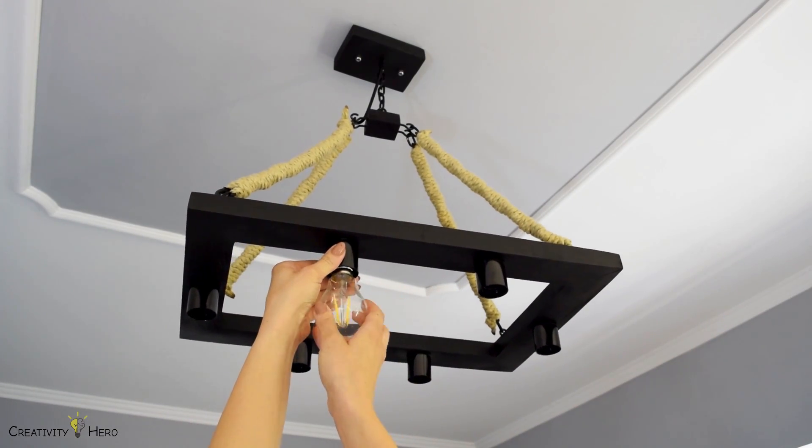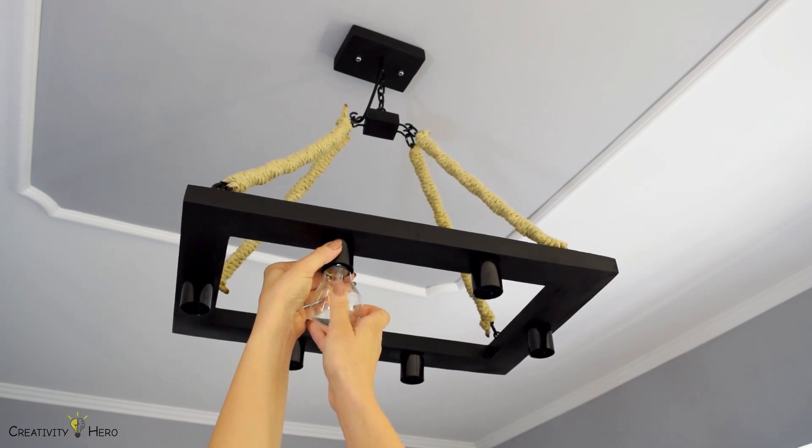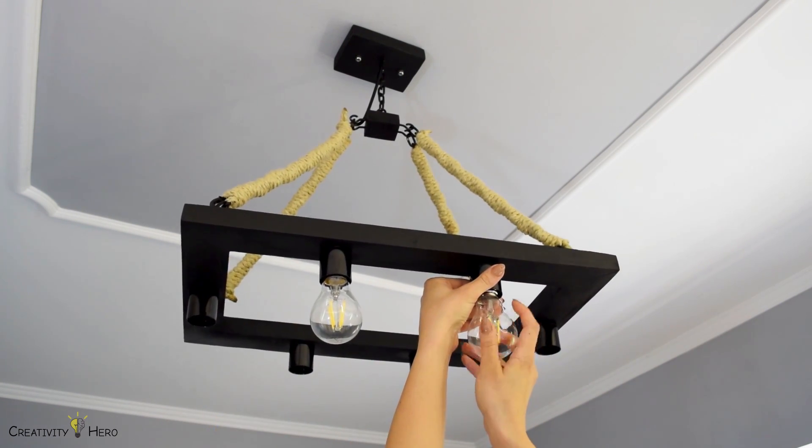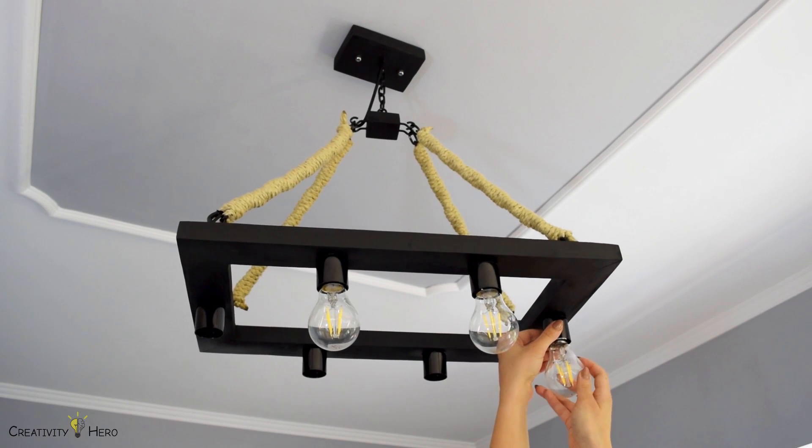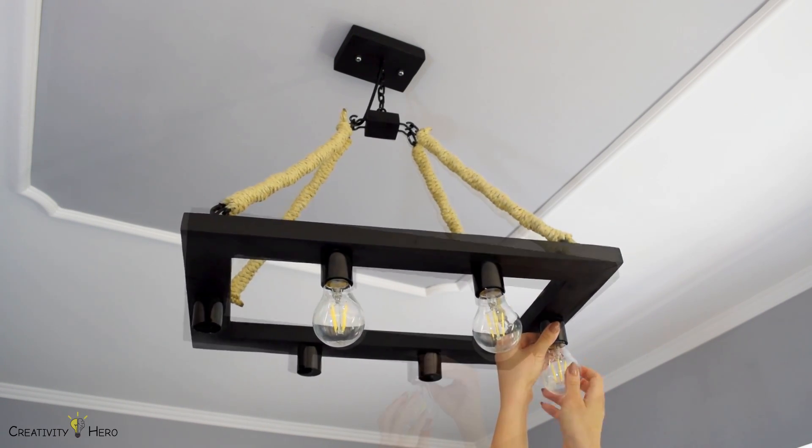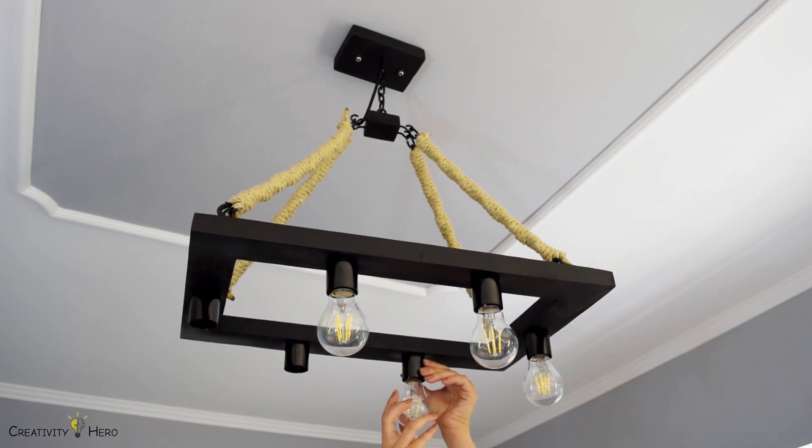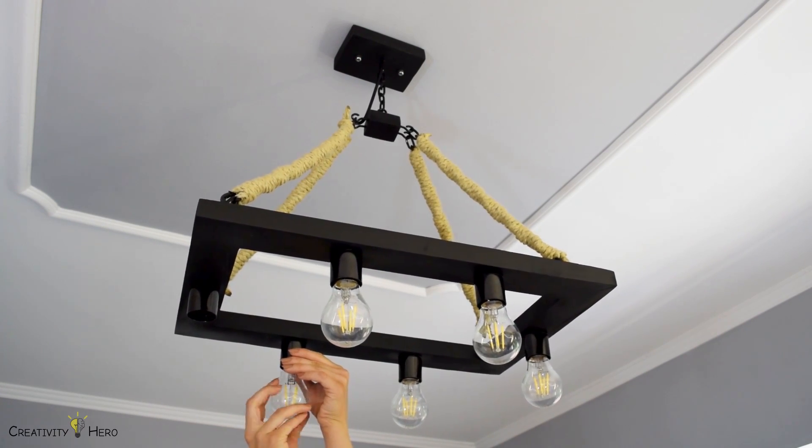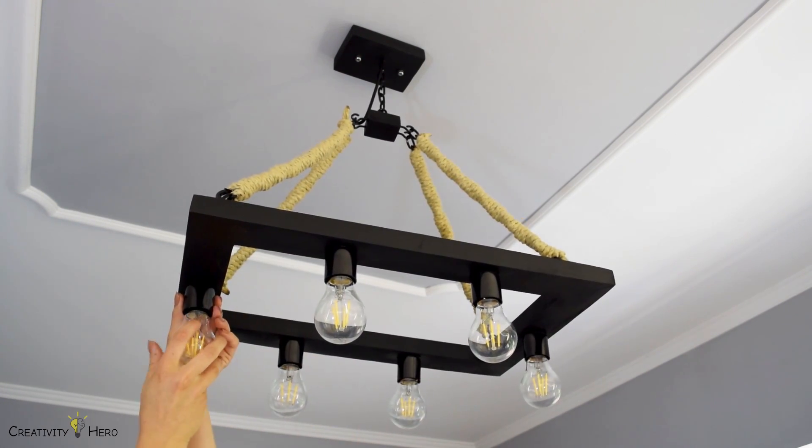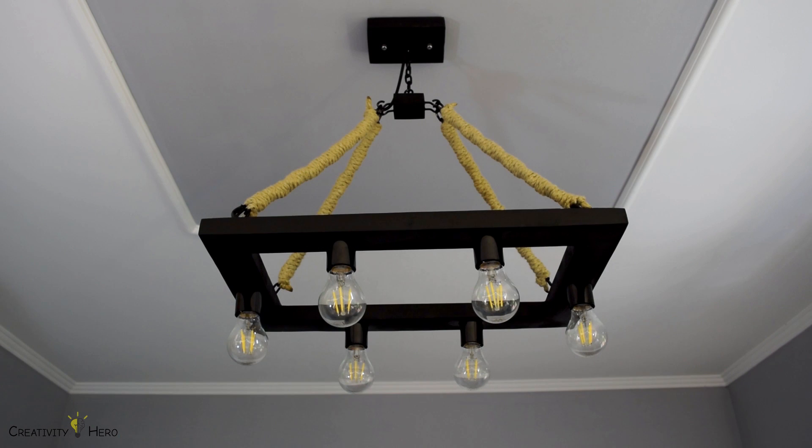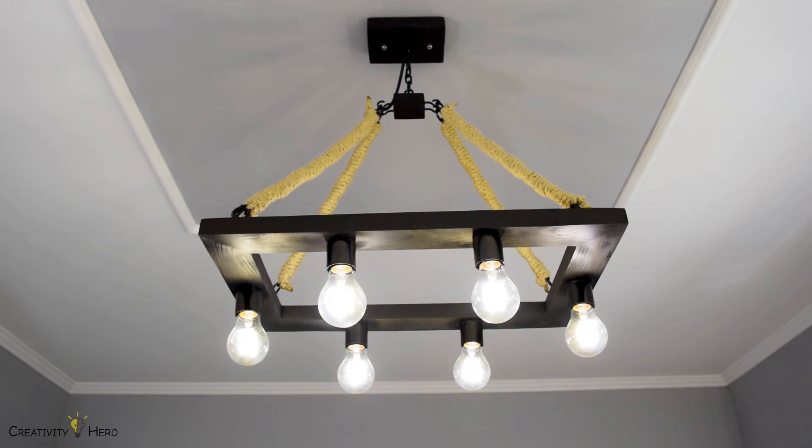The final step is to screw in the light bulbs. I've chosen to install LED vintage filament light bulbs to fit in this rustic style. And that's it. Now that I'm done I'll turn the power back on, turn my new chandelier on and enjoy the light.